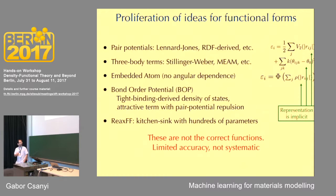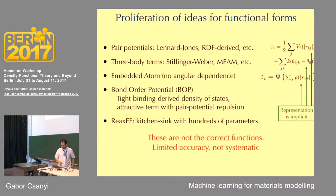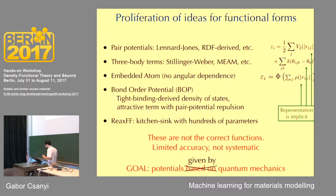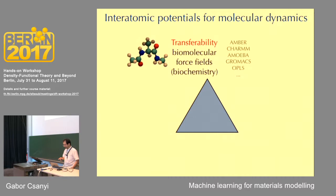The real problem with these fixed functional forms is that they're not correct — they're not the functional forms of the real electronic structure potential energy surface. This means anything you do this way will have limited accuracy, and you can't easily improve them. You can find the best pair potential or three-body potential that fits your data, and the model still doesn't work. There's nothing you can do within that approach. So what we're trying to do with machine learning is to have a potential that is given by quantum mechanics, not just based on it.